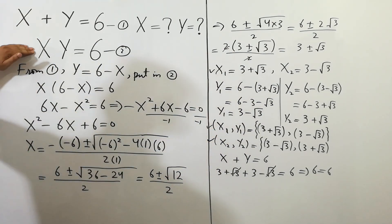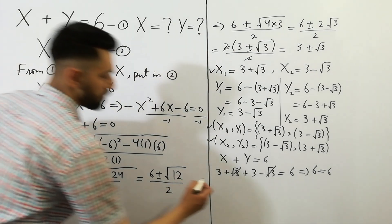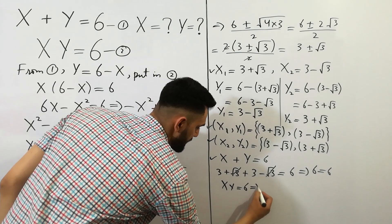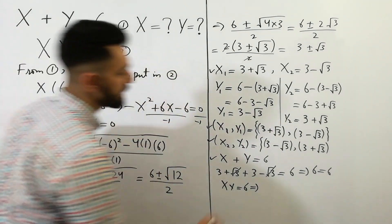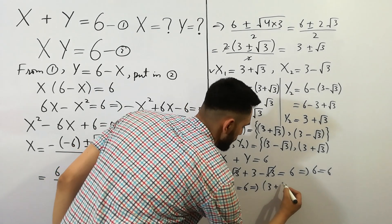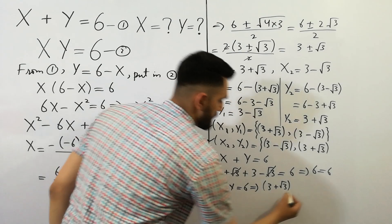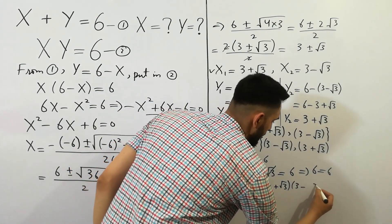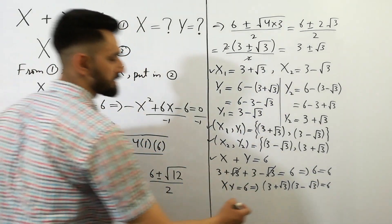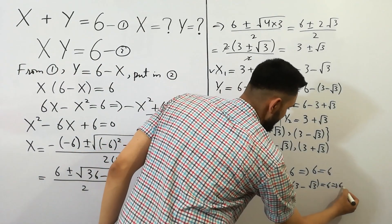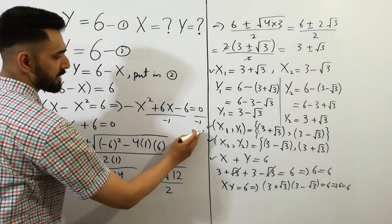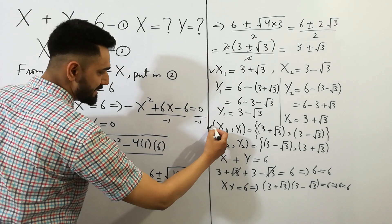Now we check that xy is equal to 6. Putting x is equal to 3 plus square root of 3 and y is equal to 3 minus square root of 3, and multiplying: by simplification we get 6 is equal to 6, which confirms that these values of x and y satisfy both original equations.